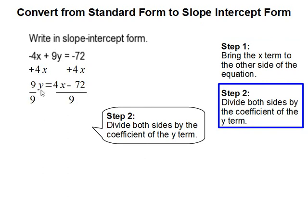So, we want to get y by itself, so we're going to divide the coefficient on both sides, which is 9. And that gets us y equals 4 over 9x minus 8.